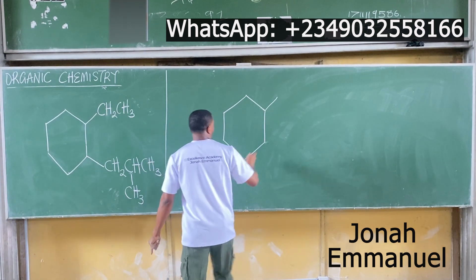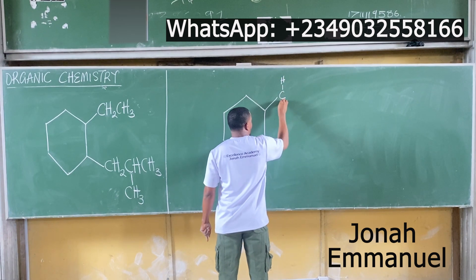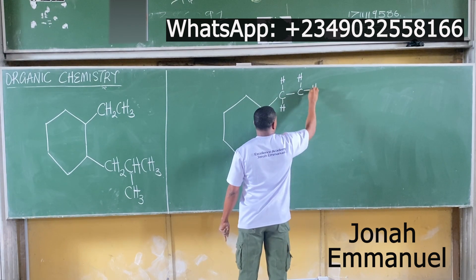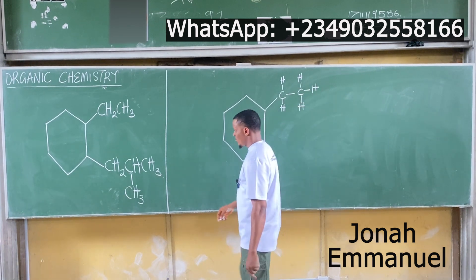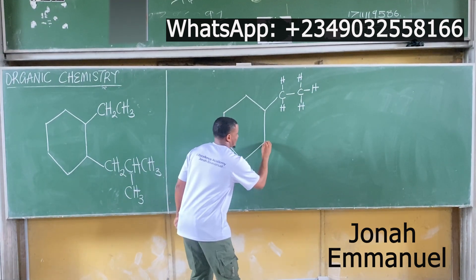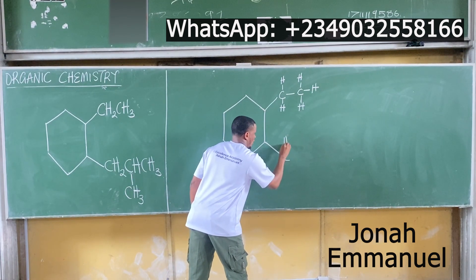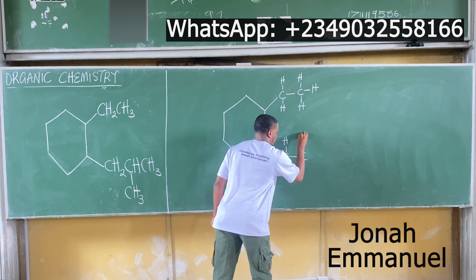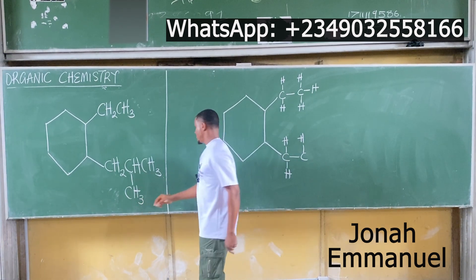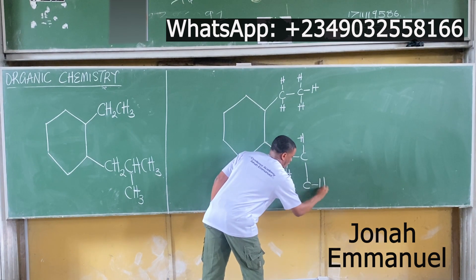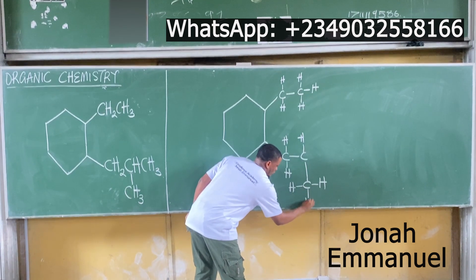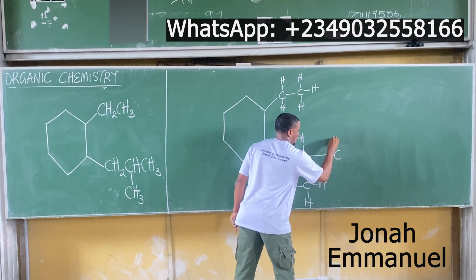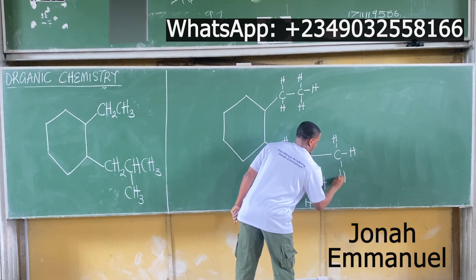Draw it out in full: CH2 becomes C with H, H attached to CH3 — that's carbons 1, 2, and 3. Come to this CH2 first — C 1, 2 — then CH, and then CH downward. CH3 comes down here, C 1, 2, 3.